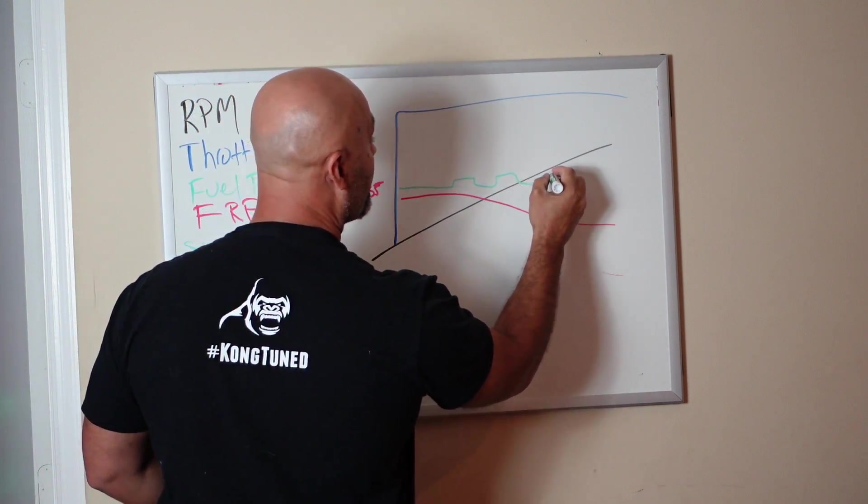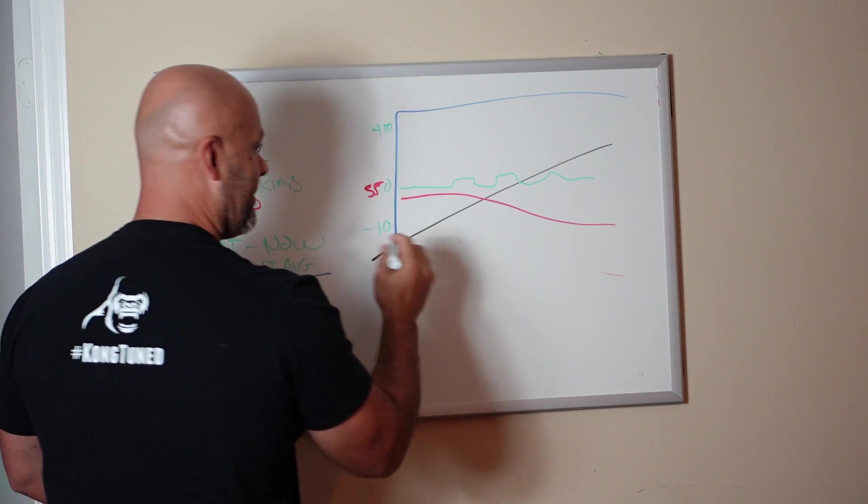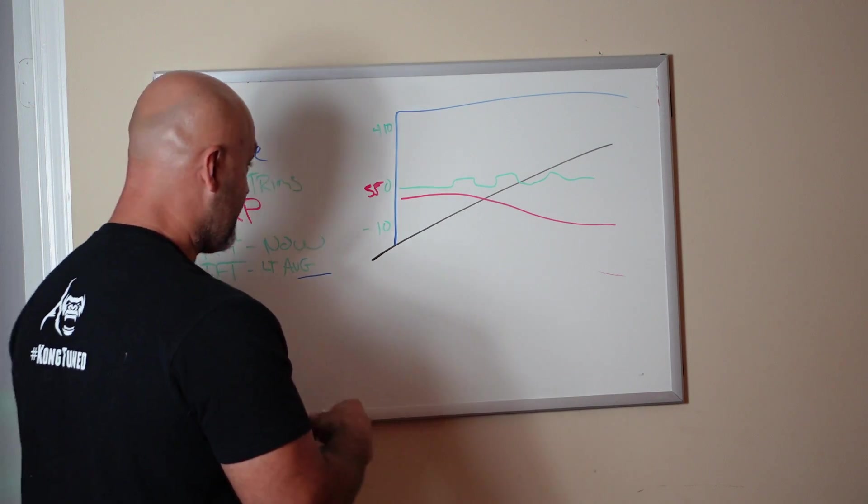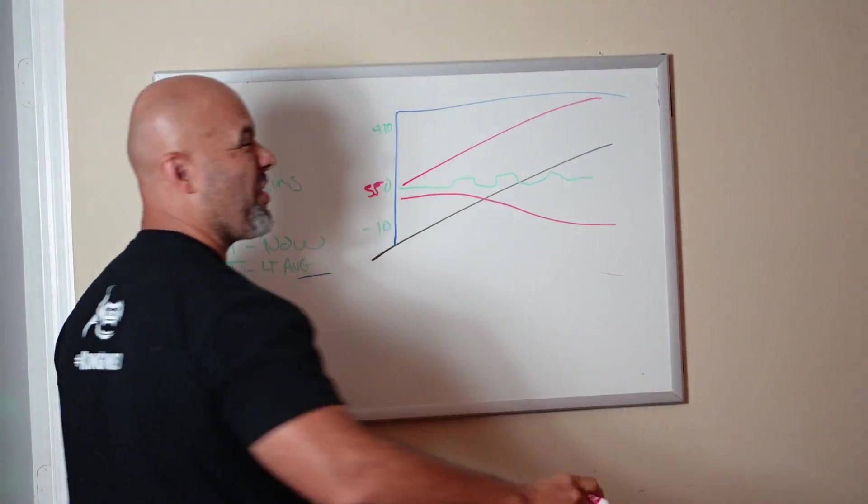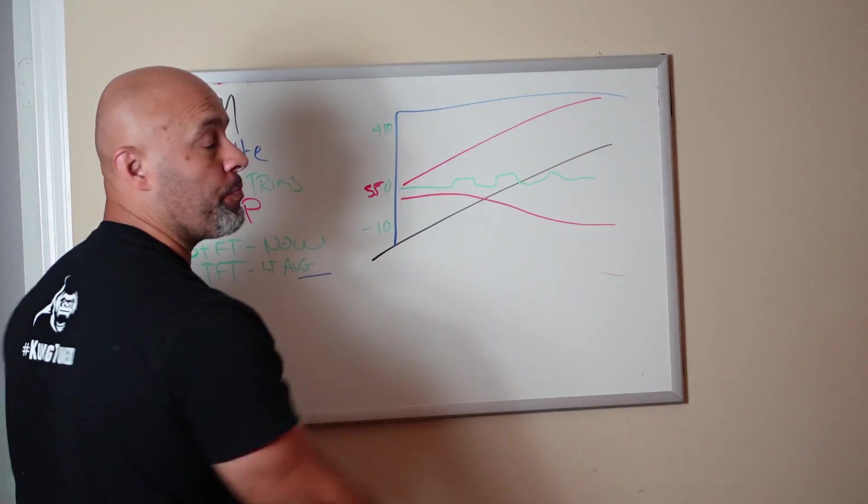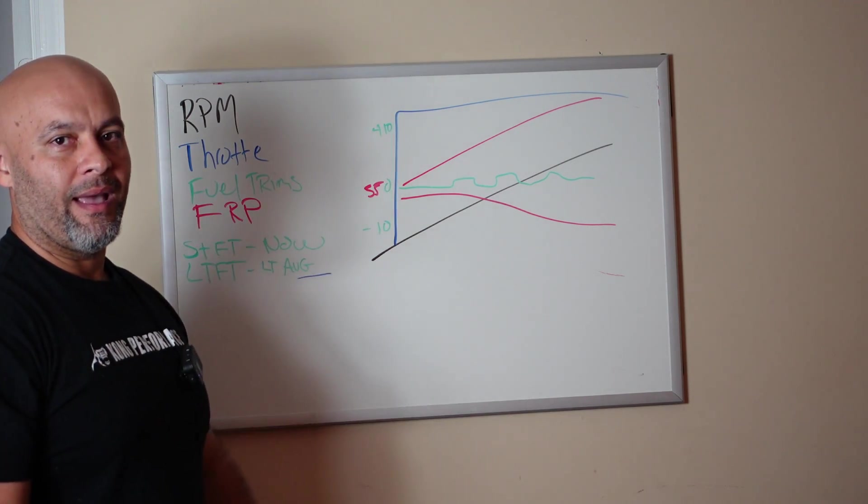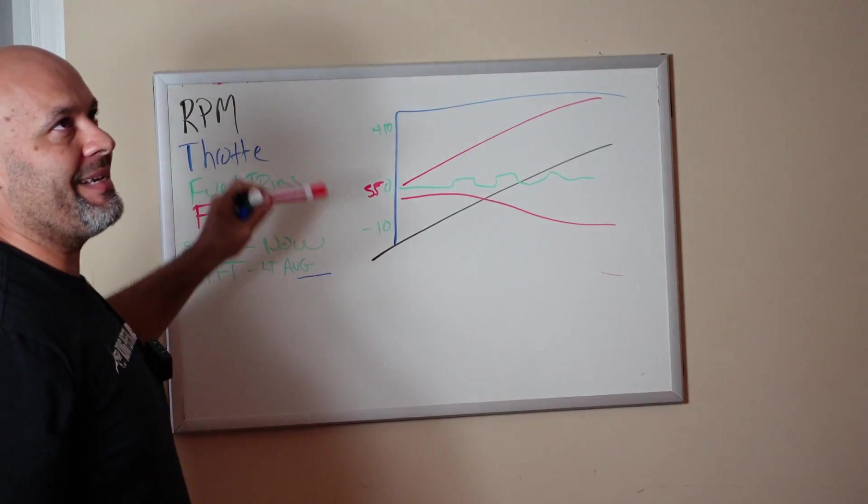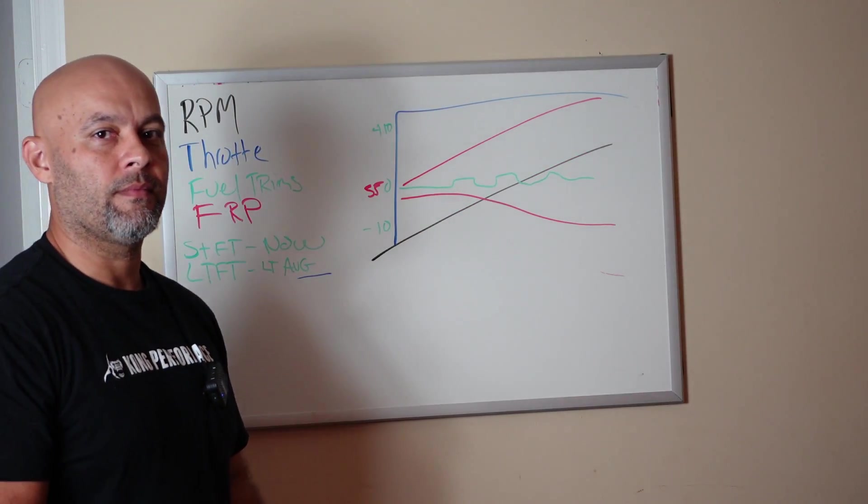His short trims were doing exactly what they do when they're not boost referenced. They start to flatline, not going up or down, not spiking, just hanging out. I'm like, do you have a boost reference line on your regulator? He didn't. Now he puts a boost reference line in it, and all of a sudden his fuel pressure goes up. The car gains like 80 horsepower because now it has adequate fuel pressure.